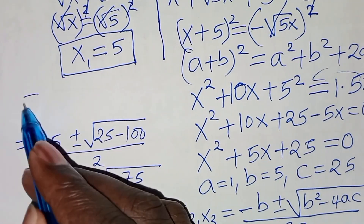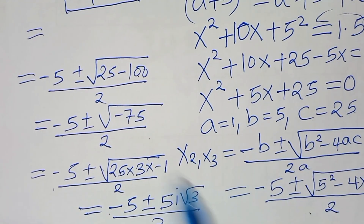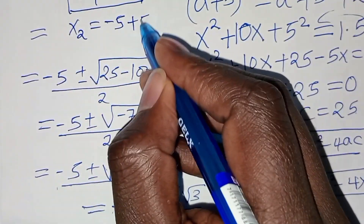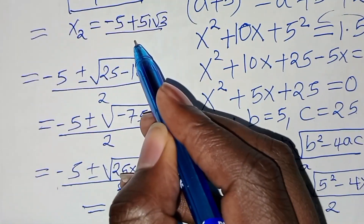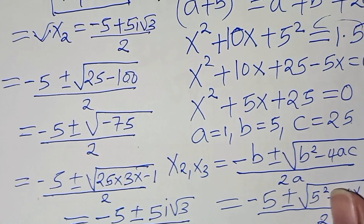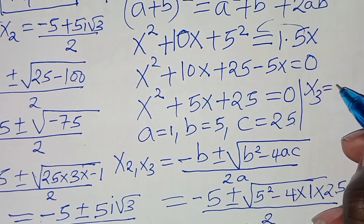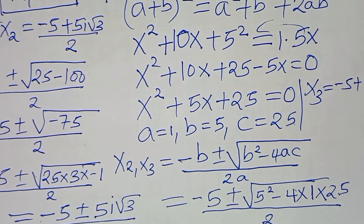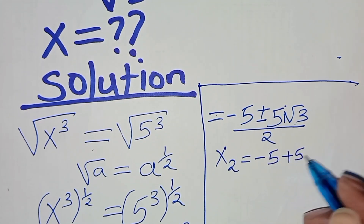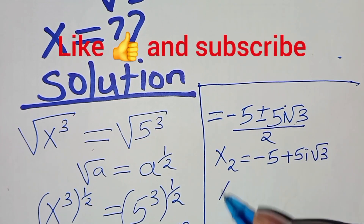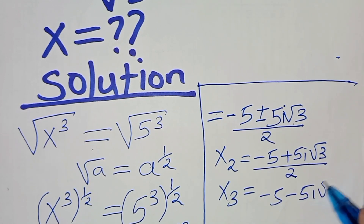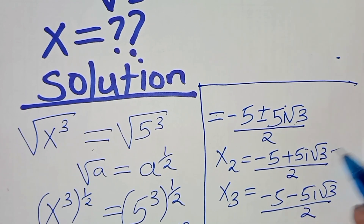This gives us x₂ equal to (negative 5 plus 5i√3) divided by 2, and x₃ equal to (negative 5 minus 5i√3) divided by 2. These are two complex solutions.